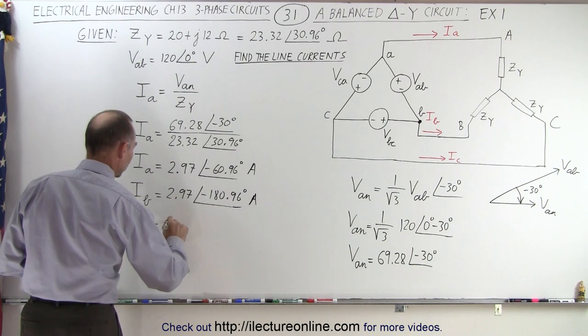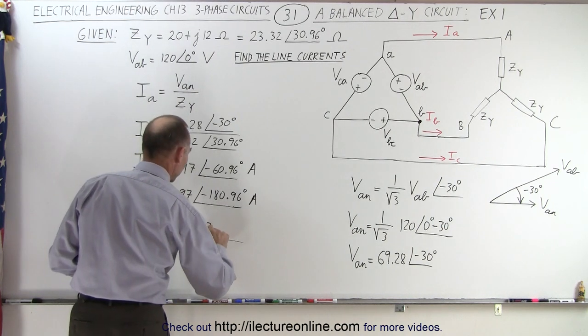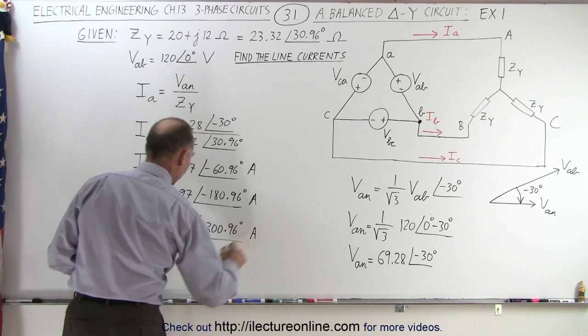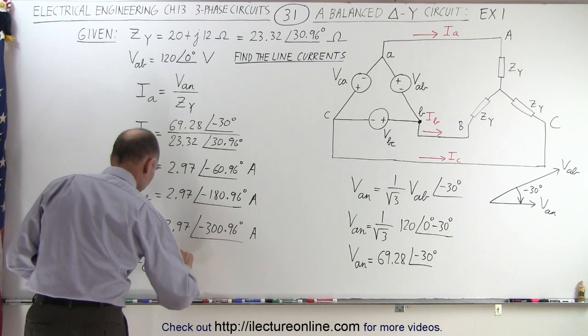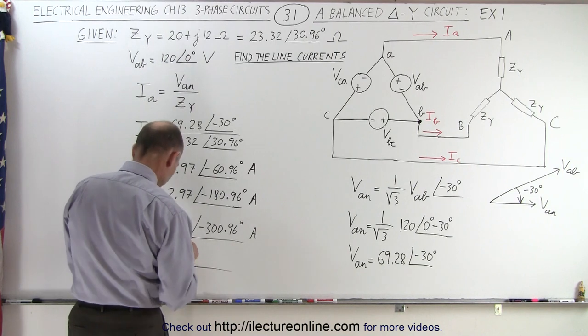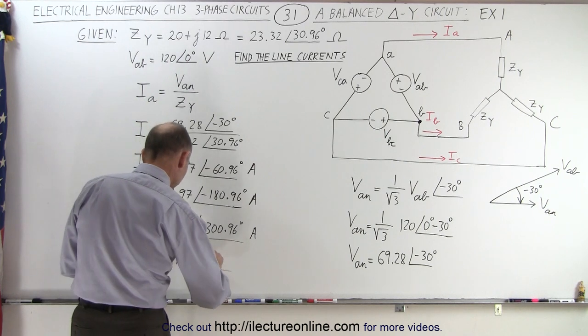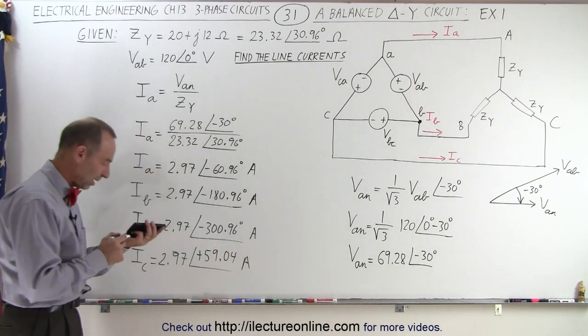And finally, I sub C would be equal to 2.97 with a phase angle of minus 300.96 degrees. And we can rewrite I sub C with a positive angle of 2.97. Add 360 to that. That would be minus 300.96 plus 360 is a positive 59.04, and that's in terms of amps.